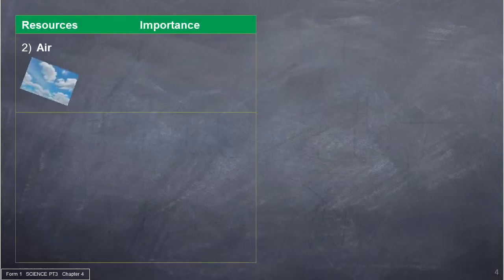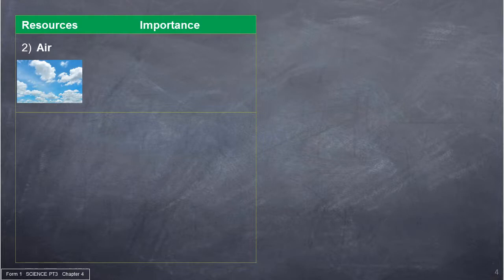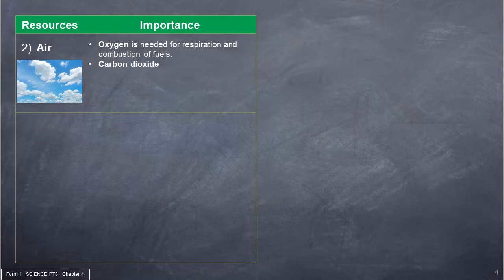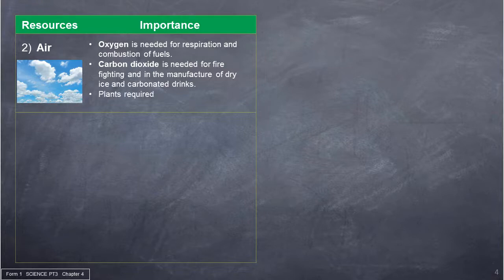The importance of air: oxygen is needed for respiration and combustion of fuels. Carbon dioxide is needed for firefighting and in the manufacture of dry ice and carbonated drinks. Plants require carbon dioxide during photosynthesis.